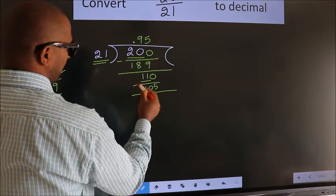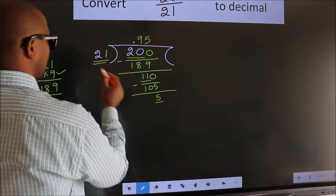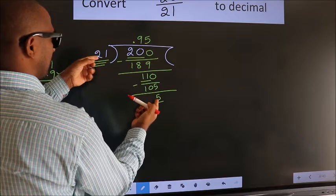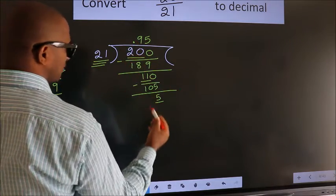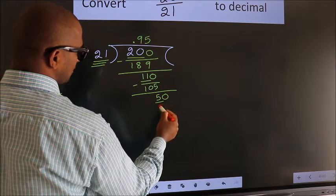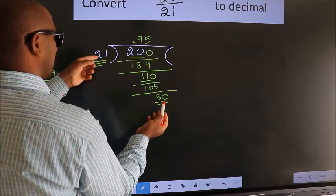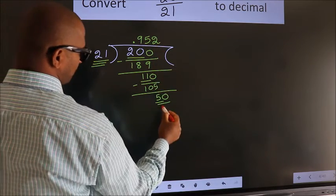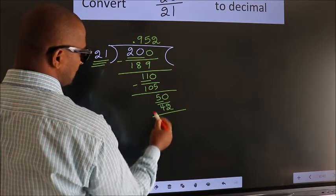So 50. Here we have 5. Here 21. 5 smaller than 21. And we already have the decimal. So we can directly take 0. So 50. A number close to 50 in 21 table is, 21 2s, 42. Now we subtract.